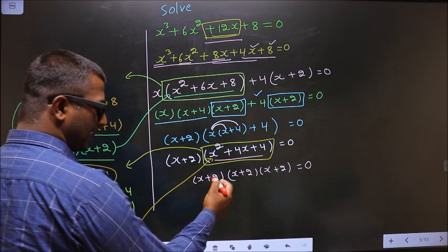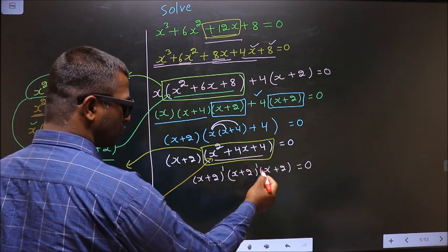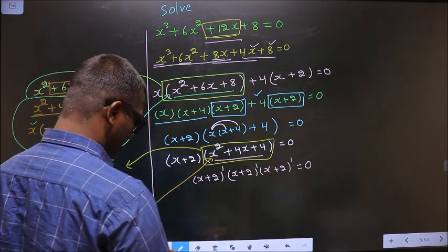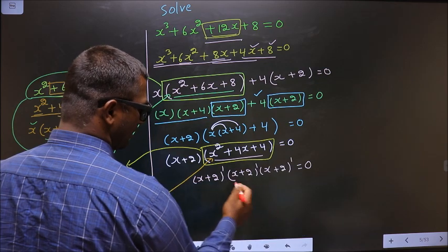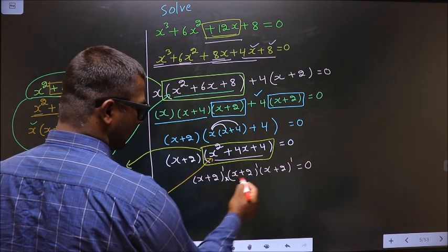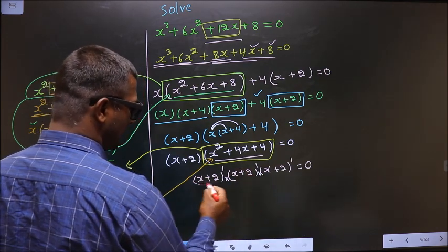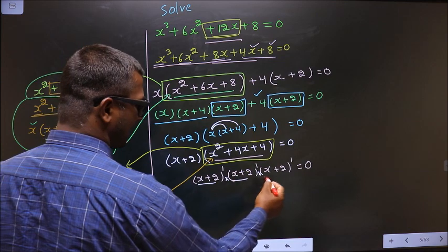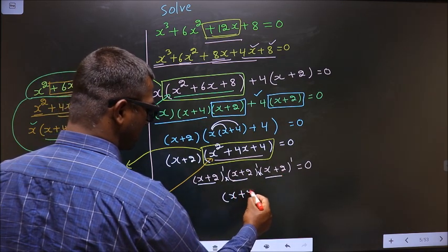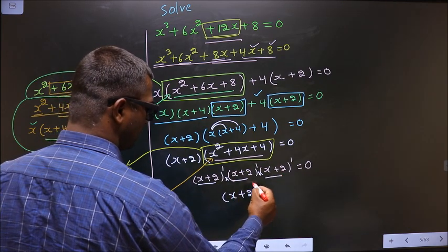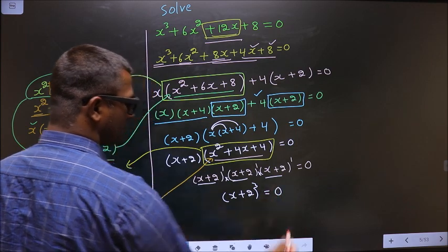See — x plus 2 power 1, x plus 2 power 1, x plus 2 power 1. You have multiplication between them. These are the same, so this will result in x plus 2 whole cube equal to 0.